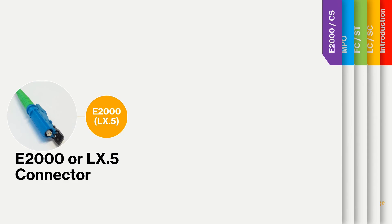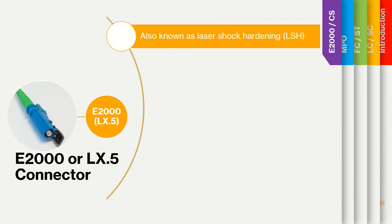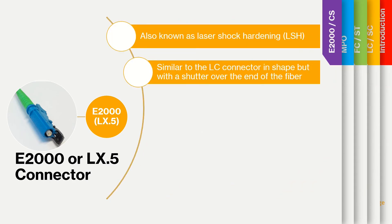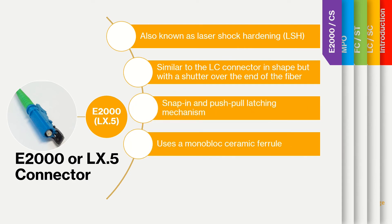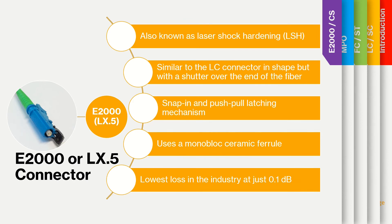The E2000 connector is identical to the LX5 connector and is also referred to as a laser shock hardening connector, LSH. It is similar to the LC connector in shape but with a shutter over the end of the ferrule. It utilizes a snap-in and push-pull latching mechanism. It is made using a monolithic ceramic ferrule that results in the lowest loss in the industry at just 0.1 dB. E2000 connectors are available in single mode and multi-mode, and the single mode connector is available in PC and APC polishes.